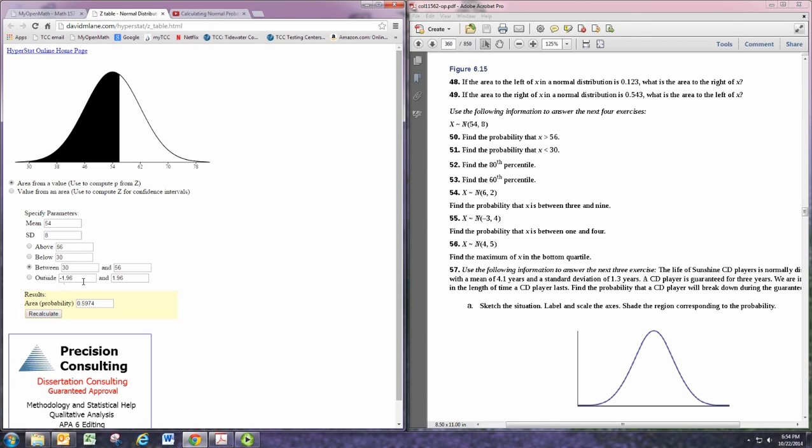Or, we can do outside. So, select outside—it'll do less than 30 and greater than 56. So, we have the area shaded on the right, and also the area shaded on the left. It's going to add those two together.